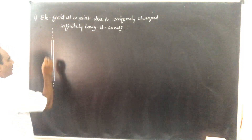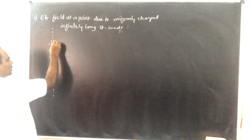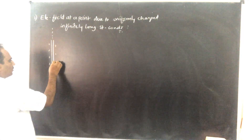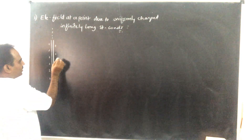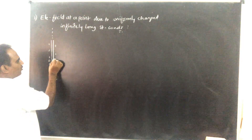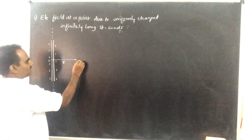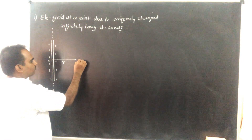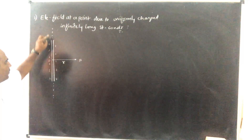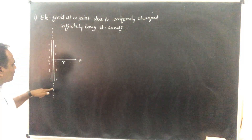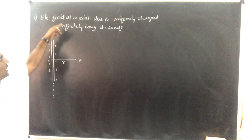Here we consider a straight infinitely long uniformly charged conductor. This is infinitely long and uniformly charged. As you know, charge resides on the outer surface of this conductor. From a point O, at a distance R — that means at a point P — I want to find the electric intensity at a distance R from the uniformly charged infinitely long straight conductor.